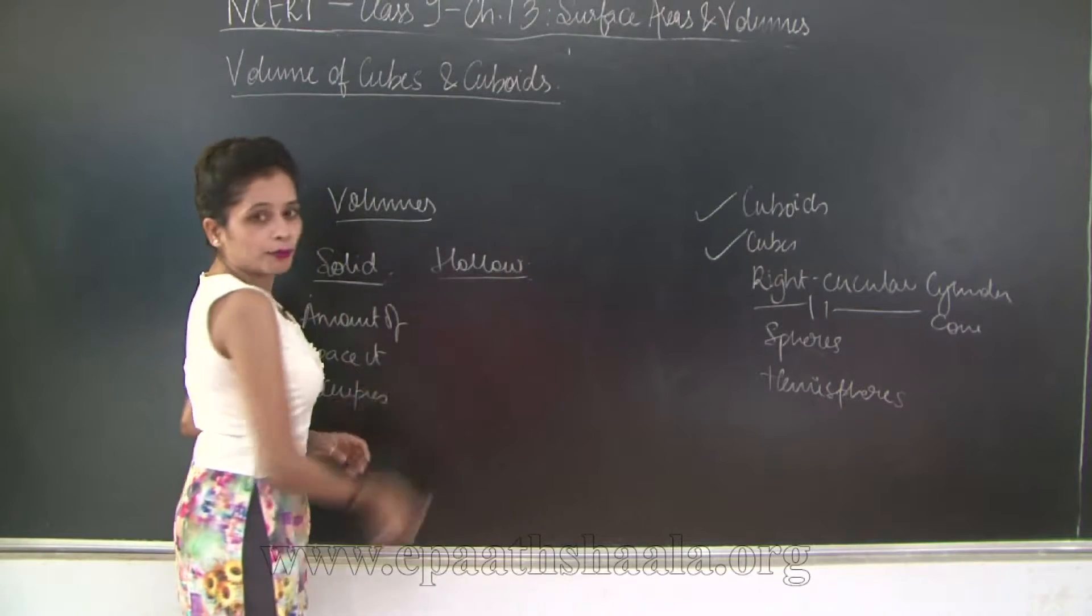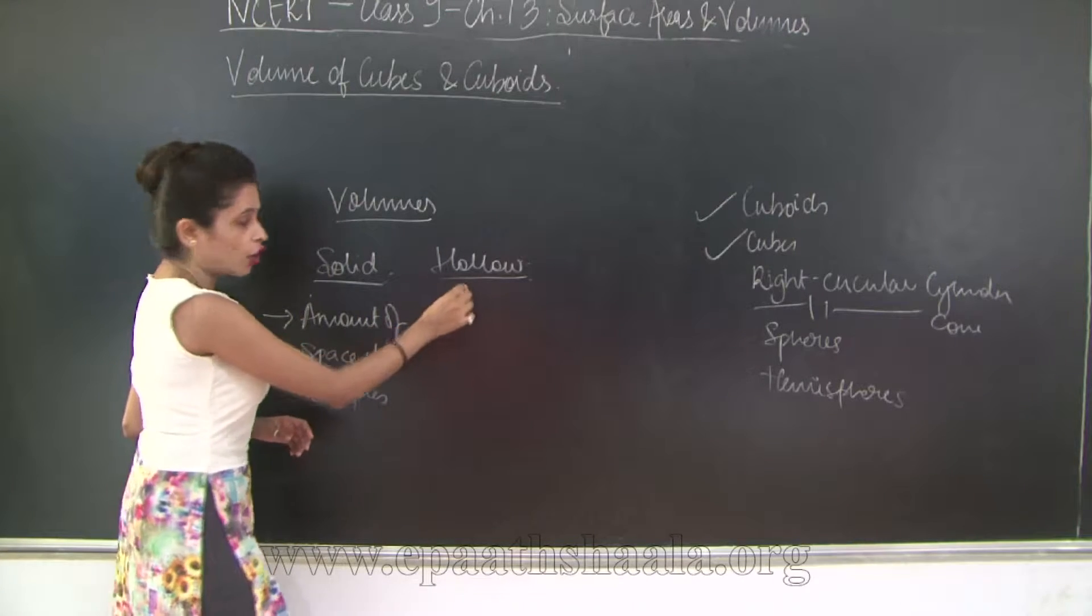When I talk about solid objects I am saying that the volume is amount of space it occupies. And when I say hollow, so the volume for any hollow object is its capacity.